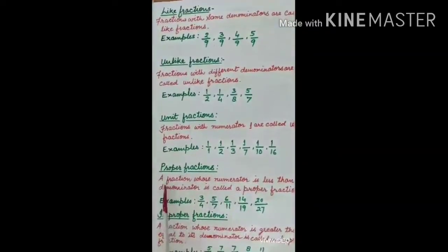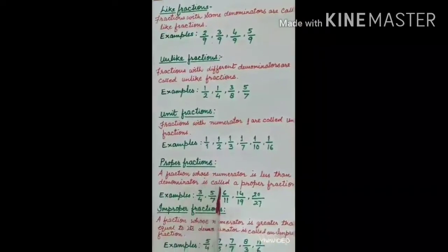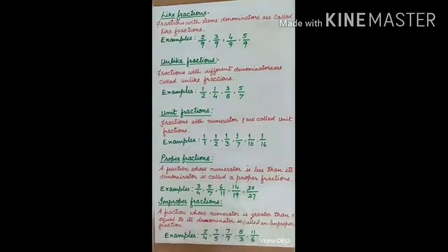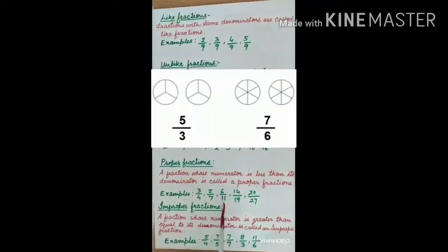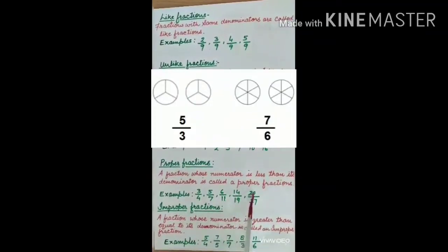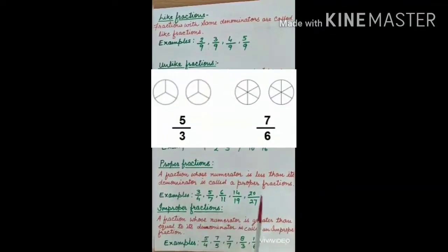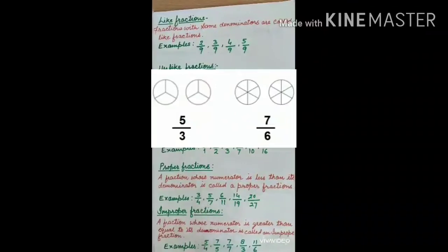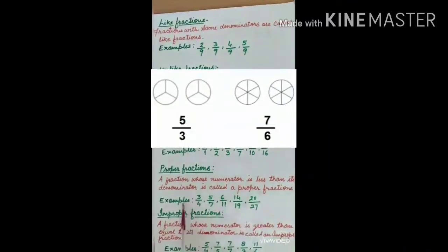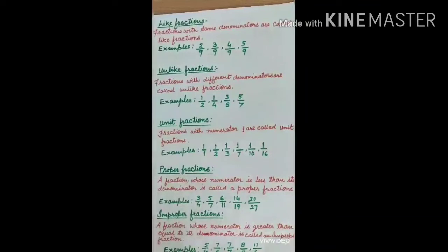Proper fractions: a fraction whose numerator is less than its denominator is called a proper fraction. For example, 3 upon 4, 5 upon 7, 6 upon 11, 14 upon 19, and 20 upon 27. In all these fractions, the numerator is less than the denominator, so these are examples of proper fractions.